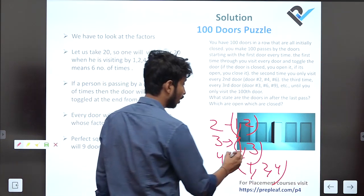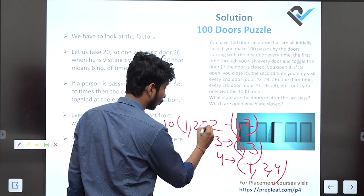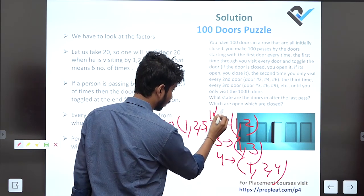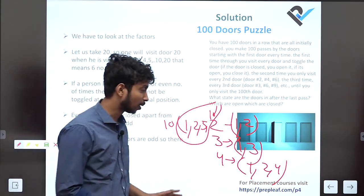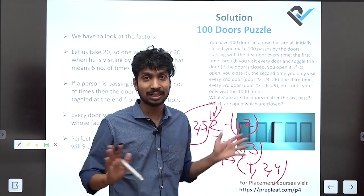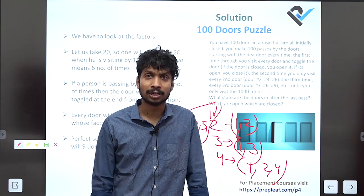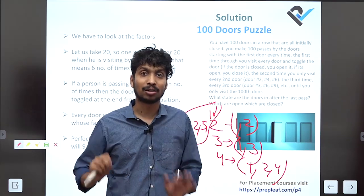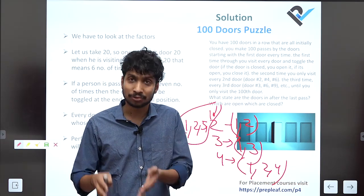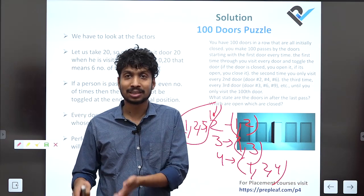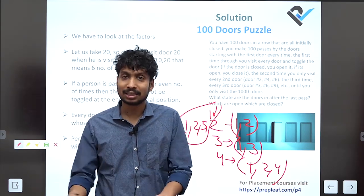For door 10, how many times will we visit it? The factors of 10 are 1, 2, 5, and 10 — so we visit it four times. In general, the number of times we visit a door equals the number of factors of that door number. We can calculate this for any door.